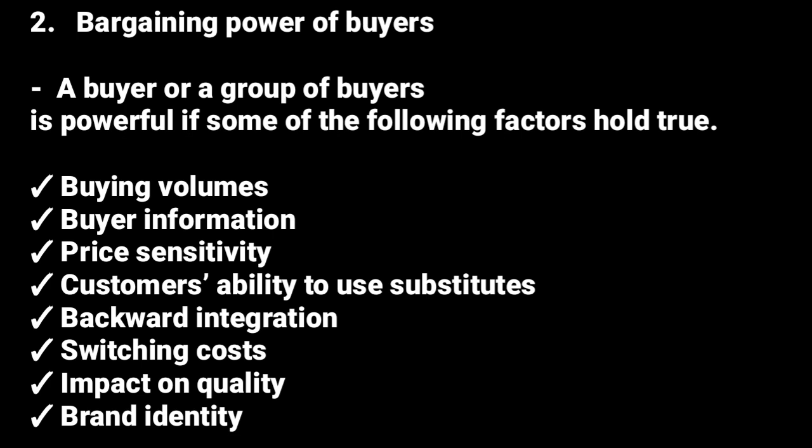Another factor is switching costs. If there is no cost involved in switching from your product to a competitor's product, customers are likely to have bargaining power. For example, if it costs nothing to switch from one detergent brand to another, you have bargaining power. A university is a good contrast — switching universities can require repeating courses or paying extra fees, which is why students don't have much bargaining power when it comes to education.